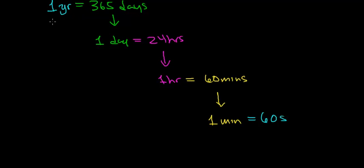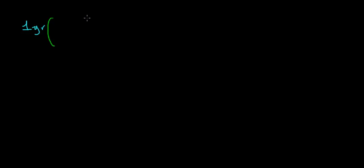We're going to use these unit relationships to convert between years and seconds. We begin with one year and multiply it by a conversion factor that takes us from units of years over to units of days — one year equals 365 days. Notice that the unit of year cancels out, and the unit we're left with is days.